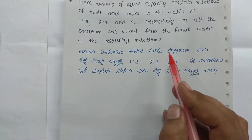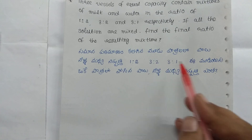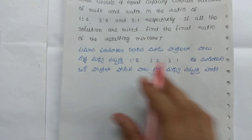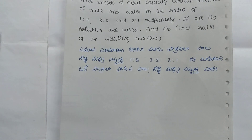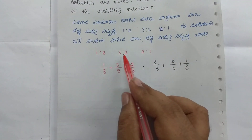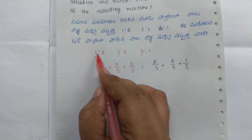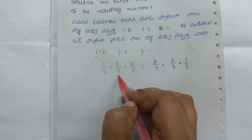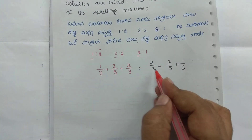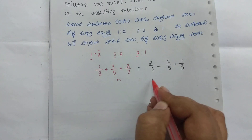Okay, in the process with 3 vessels, the ratios are 1 to 2, 3 to 2, and 3 to 1. If you need to add 3 mixtures together, the particles are mixed with water. This is the trick for this type of problem. The milk fractions are: 2 by 3, 2 by 5, and 1 by 3. Now the total is to 1.